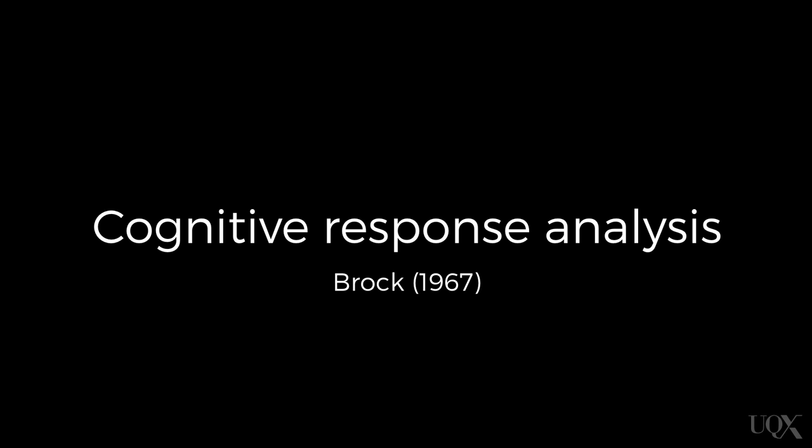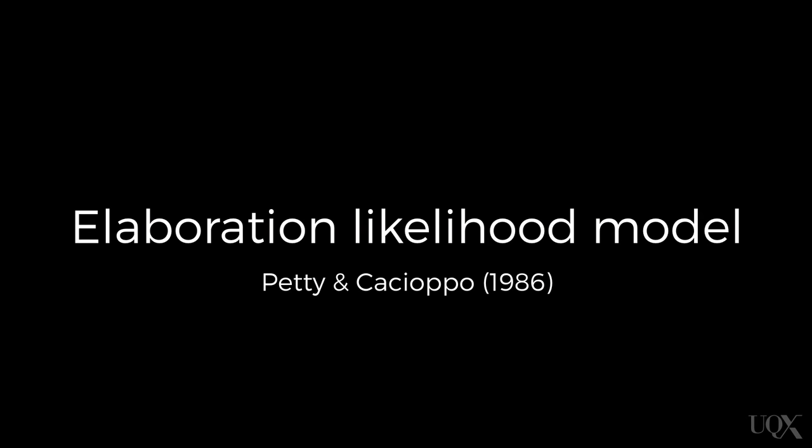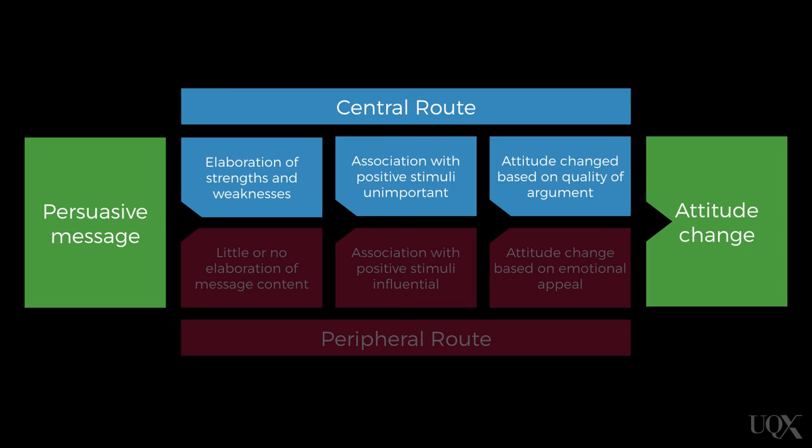Brock's model of cognitive response analysis makes a similar point. According to this perspective, the persuasive message and the things associated with it are the focus of elaborative thoughts — essentially whether we think favourably or not about the message. It's those thoughts that lead to attitude change. This is similar to the elaboration likelihood model that we talked about in the attitudes topic. According to these dual process models, attitude change happens when we think about the message, at least under some conditions.